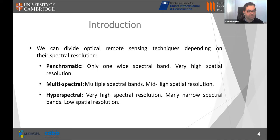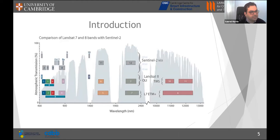Hyperspectral images consist of measuring a wide range of wavelengths with hundreds of narrow spectral bands. For each pixel, it is as if you have a spectrometer, giving you the full spectral signature of the material present in that pixel.